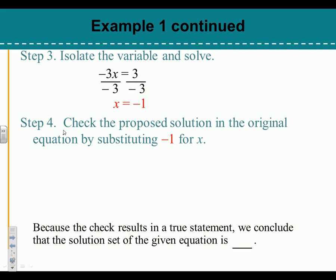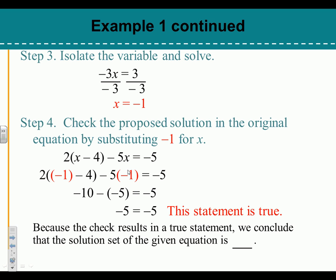Step 4, check the proposed solution. Here's my original equation. When you check it, what matters to me most is that you show me that you plug it in. And if you can put that in your calculator and tell me, show me that equals negative 5, you can just put your check mark. If you want to go through and be really good at solving equations, then you'll work through it and find out this statement is true. So, that means that the solution set is negative 1.